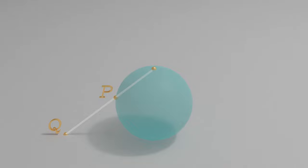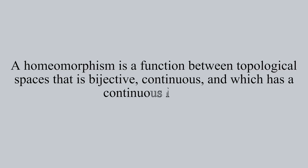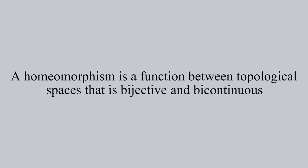So, how do we prove a homeomorphism anyway? Well, the formal definition of a homeomorphism is a function between topological spaces that is bijective, continuous, and which has a continuous inverse.